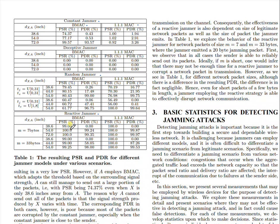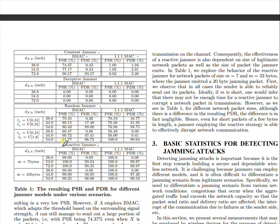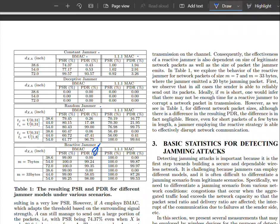This is interesting — the sent ratio is 99%, but subhanAllah the delivered is zero. The reason is that the Reactive jammer, the first thing it sees is a signal being sent, so it jams that signal — the CRC check will be an error and it's not delivered. So it's easy to detect a reactive jammer by looking at the PDR. Of course, the distance has to be really small — at higher distances it doesn't work.